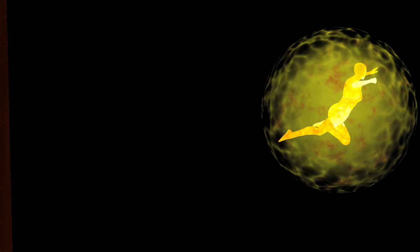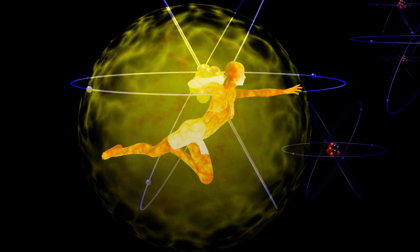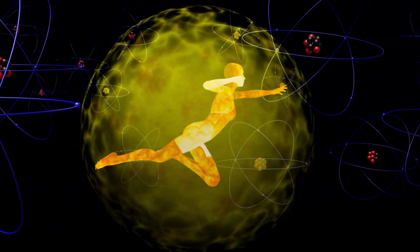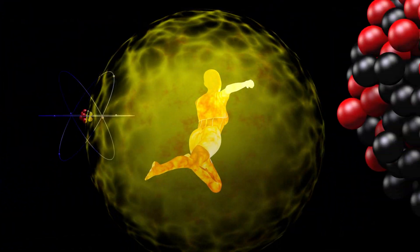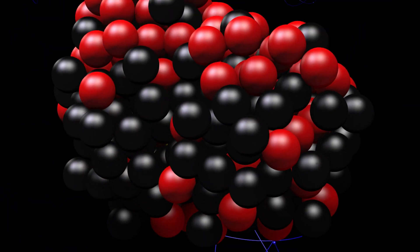A gamma ray with extremely high energy can be absorbed by the nucleus of an atom. And for certain types of atoms, this can cause the nucleus to split into two or more fragments. We call this photofission.